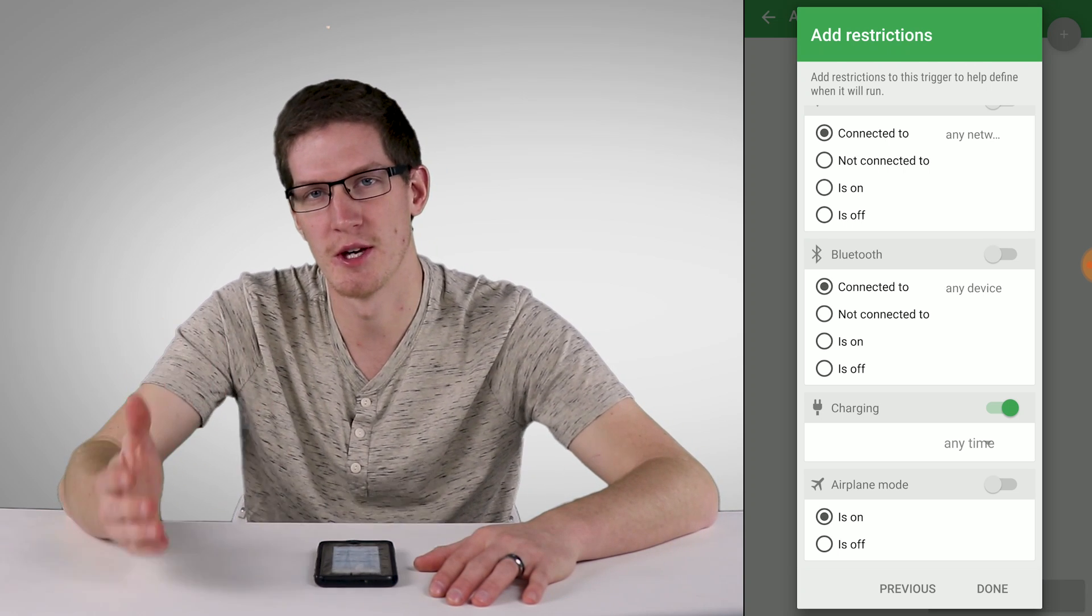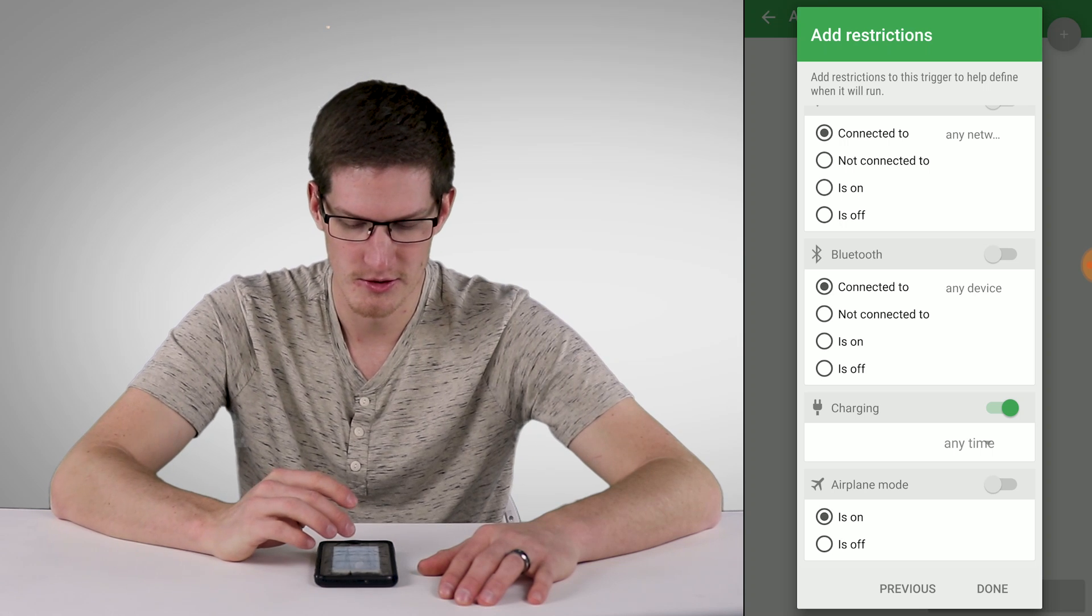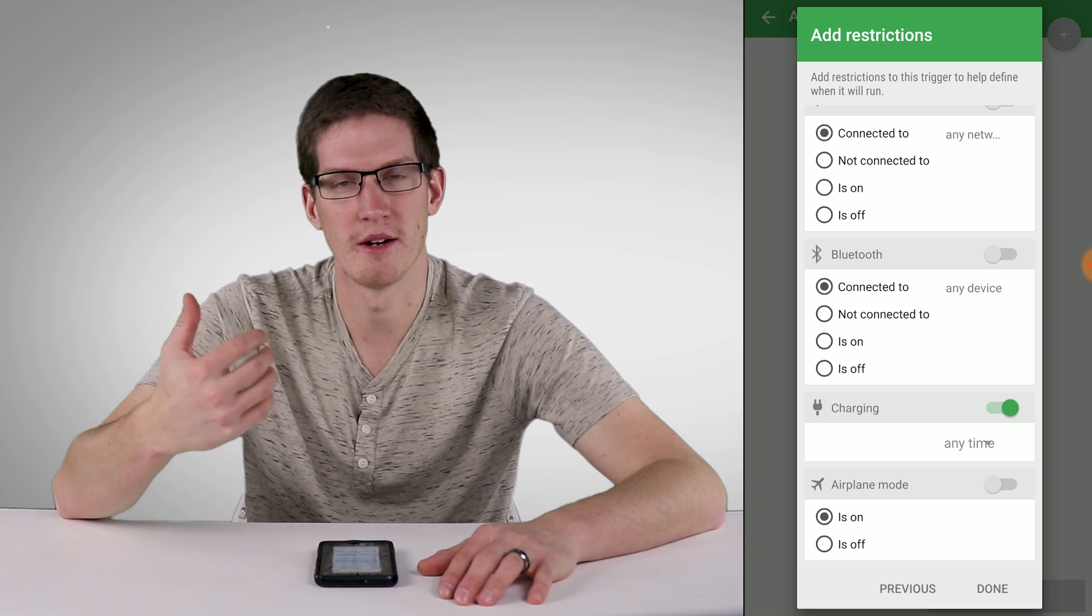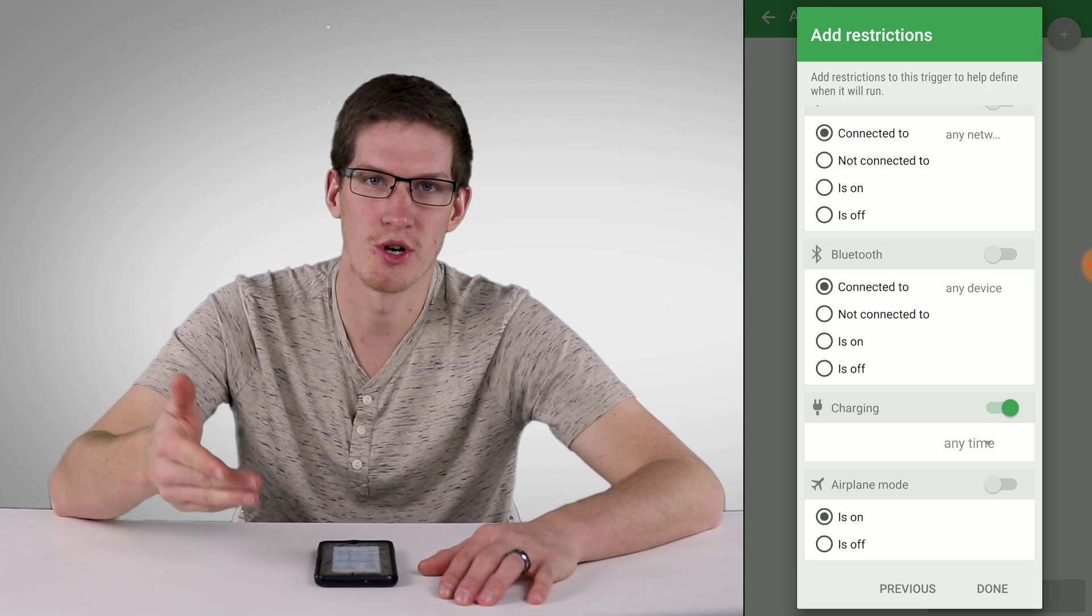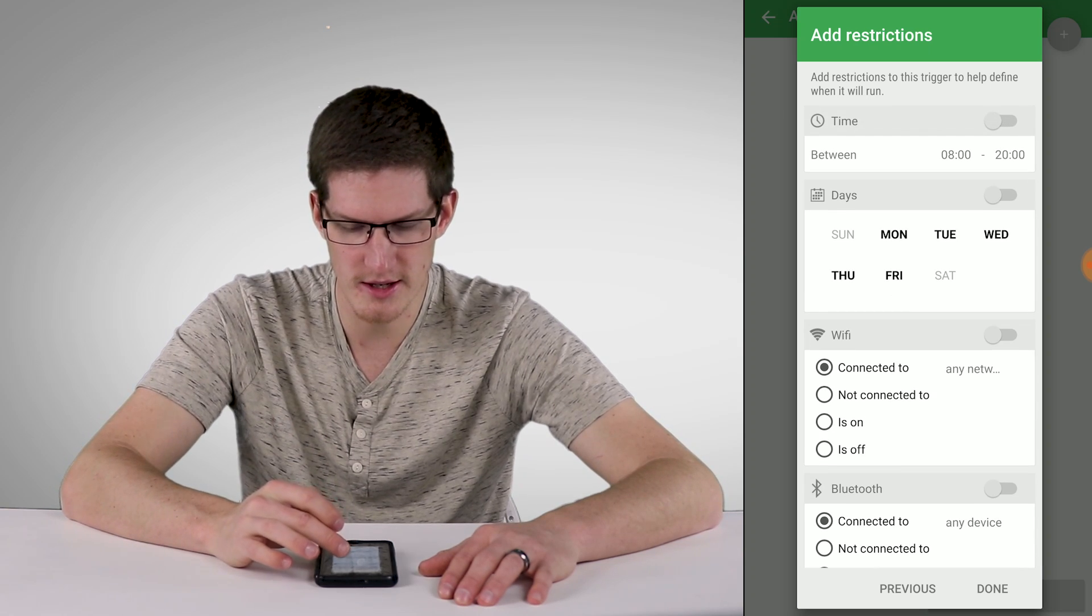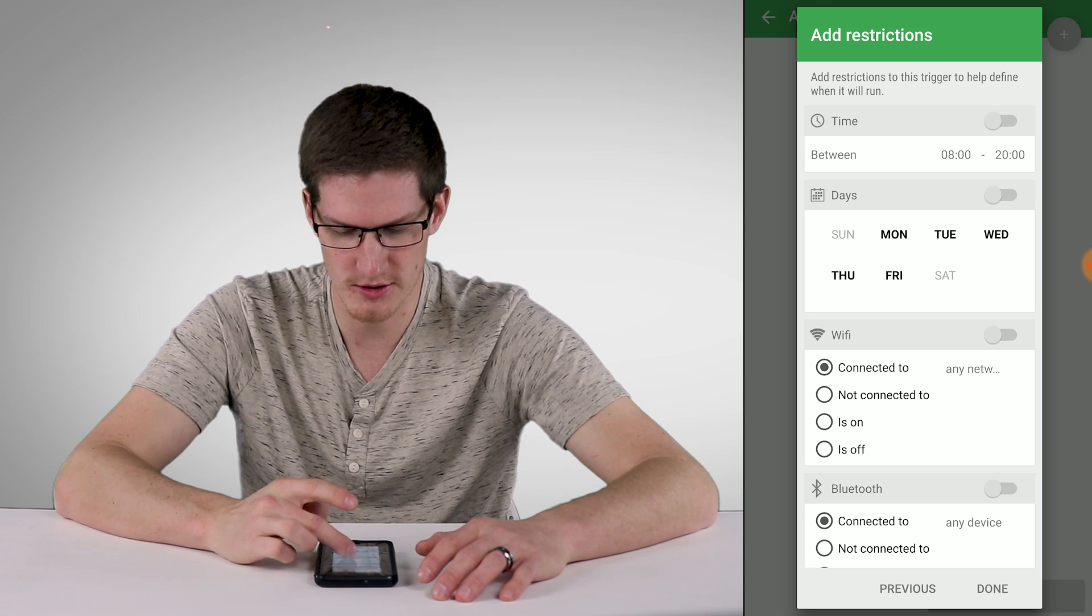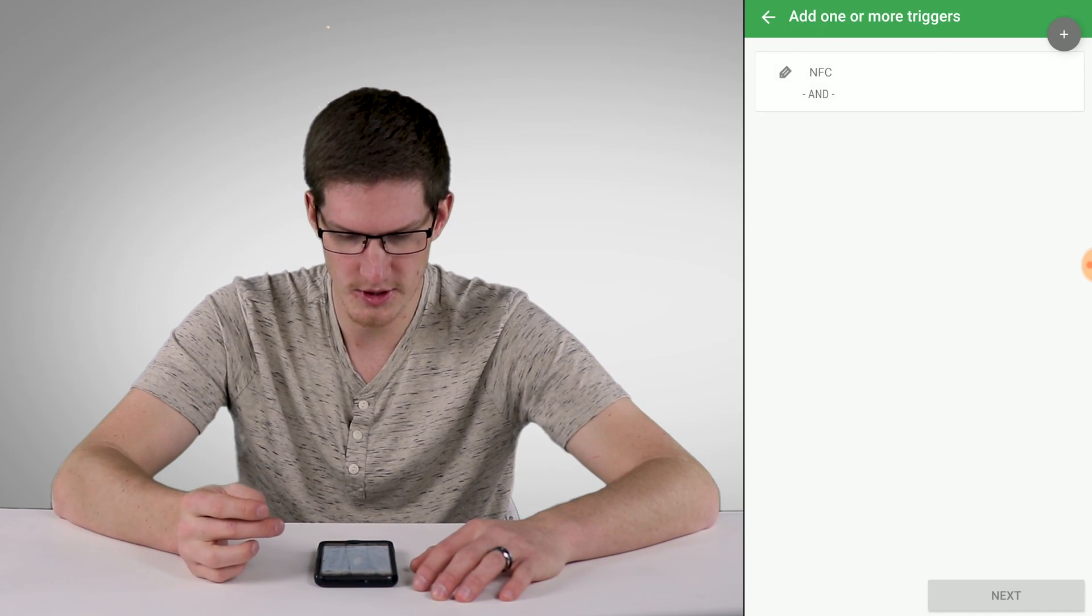I may set my phone down on that table at different parts of the day. But typically I don't need to charge my phone. So it won't actually run that trigger unless my phone is charging and I touch the tag. Another restriction you could add is time between certain times. But we go to bed at different times so that doesn't really work for us. So I'm going to click Done.